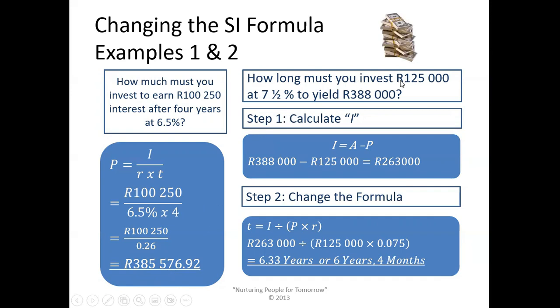Next one. How long must you invest $125,000 at 7.5% to yield $388,000? Well, here we have to be careful. First thing we have to do, if we have both the principle amount and we have the future value, is we must calculate I. So let's first calculate I. I is the future value minus the principle amount, which is then $263,000. Now, we can change the formula to make time the subject of the formula. It will be equal to I divided by P times R or just PR. And in this case, I used the division sign and not the line. The reason for that is if you are going to put it into your calculator, you are going to press the division sign.